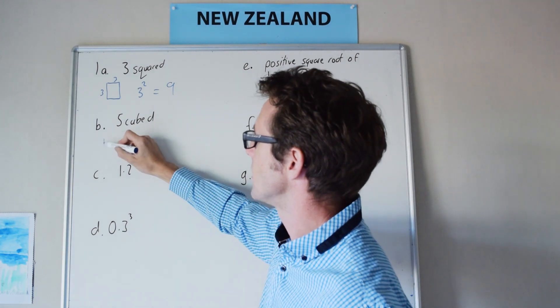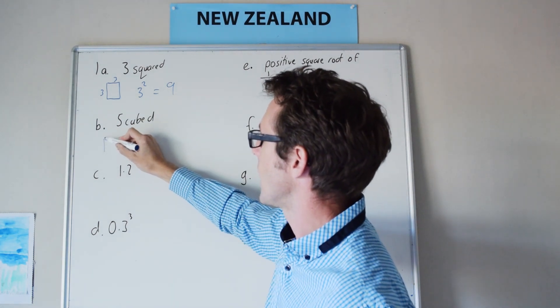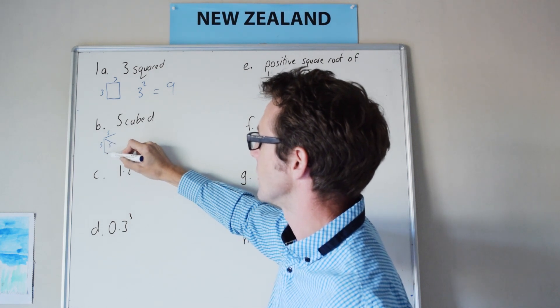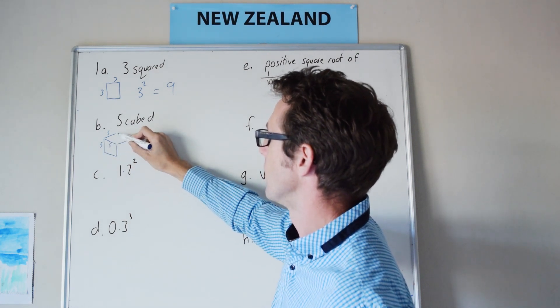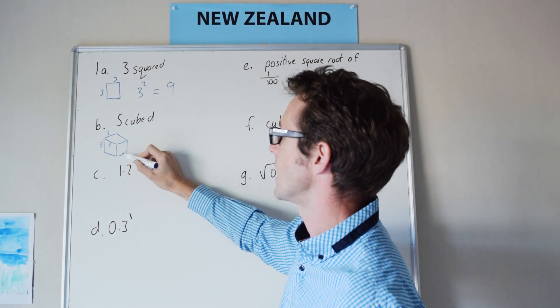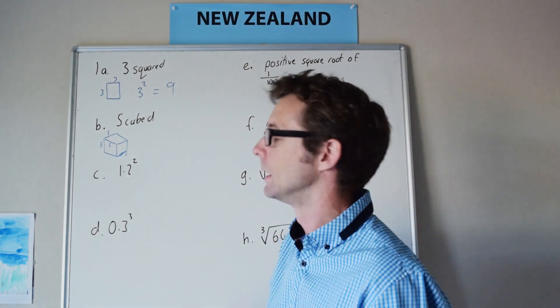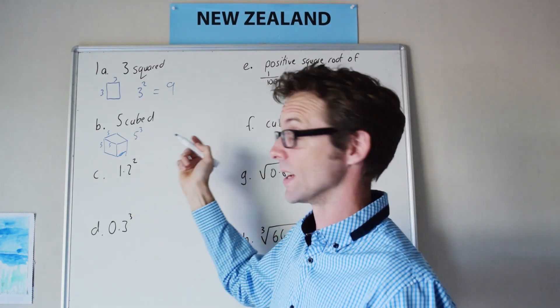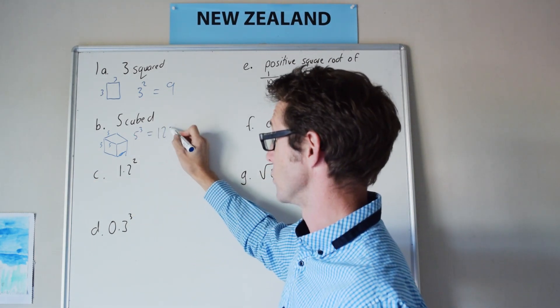5 cubed is, we're going into three dimensions here, and all of those dimensions in a cube are going to be equal and this gives us our volume. So 5 cubed, you're thinking about, anyway you get the general idea, is going to be 5 to the power of 3 or 5 times 5 times 5, so this is simply 125.